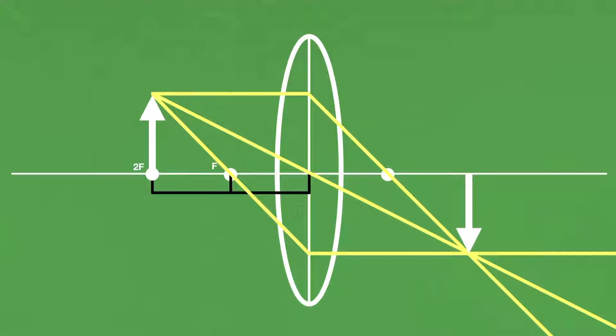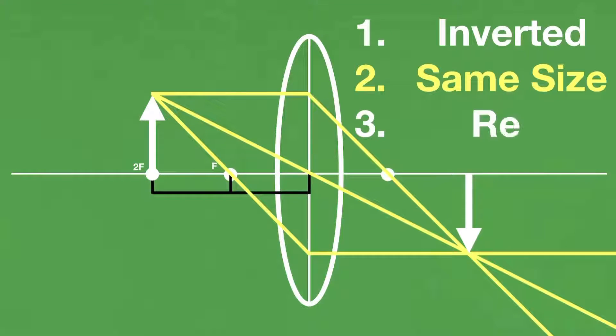So, in summary, the image of an object at 2f is inverted, is the same size, and is real.